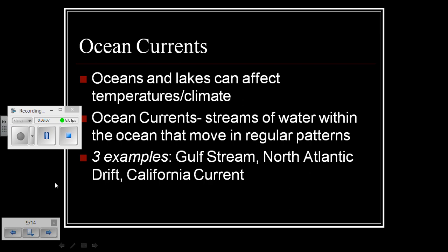Ocean currents include a topic that we've discussed previously, but you need to understand that they have a direct impact on temperature and climate. Ocean currents represent streams of water within the ocean that move in regular patterns. There are three notable examples of such currents: the Gulf Stream, which is located on the eastern coast; the North Atlantic Drift; and the California Current, which is located on the west coast. There is also an additional one called the EAC or East Australian Current.